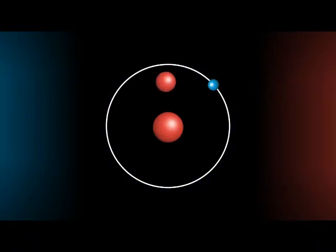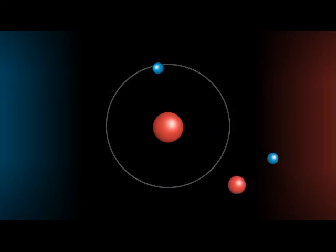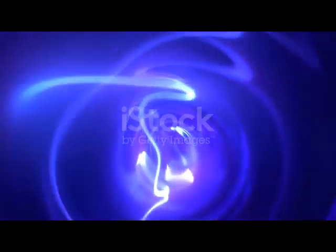In principle, we can therefore create gold by simply assembling 79 protons and enough neutrons to make the nucleus stable. Or even better, we can remove one proton from mercury, which has 80, or add one proton to platinum, which has 78, in order to make gold.